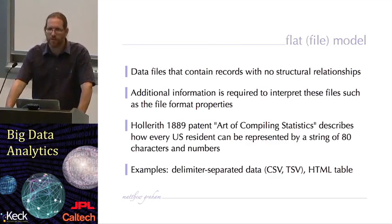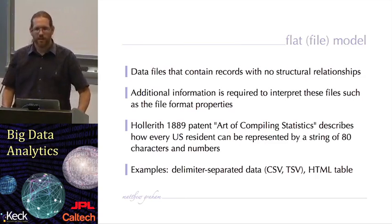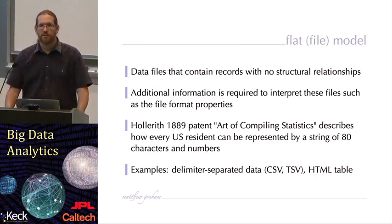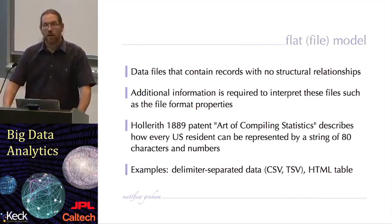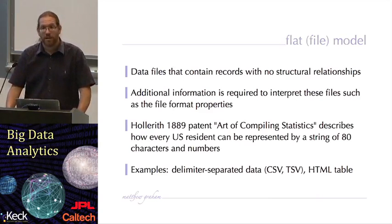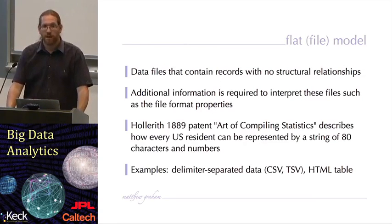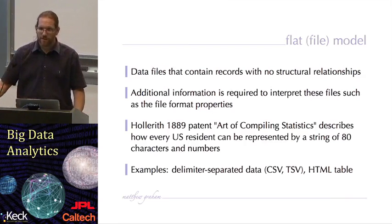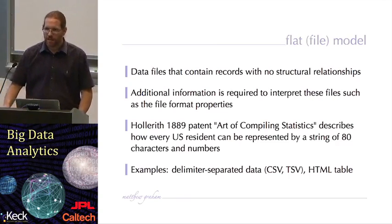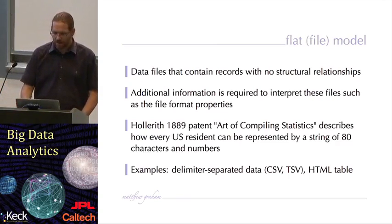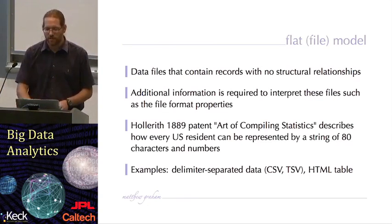One of the most famous examples in history about this is the Hollerith 1889 patent for compiling statistics. This was for census information, and it describes how every U.S. resident can be represented by a string of 80 characters and numbers. The legacy of this Hollerith patent is the screen width of 80 characters that was on many early computer screens and many early computer formats. So it's nice to see that this very first data model really had an impact in the history of computing. An example of a flat file model today is delimiter-separated data on a hard drive.